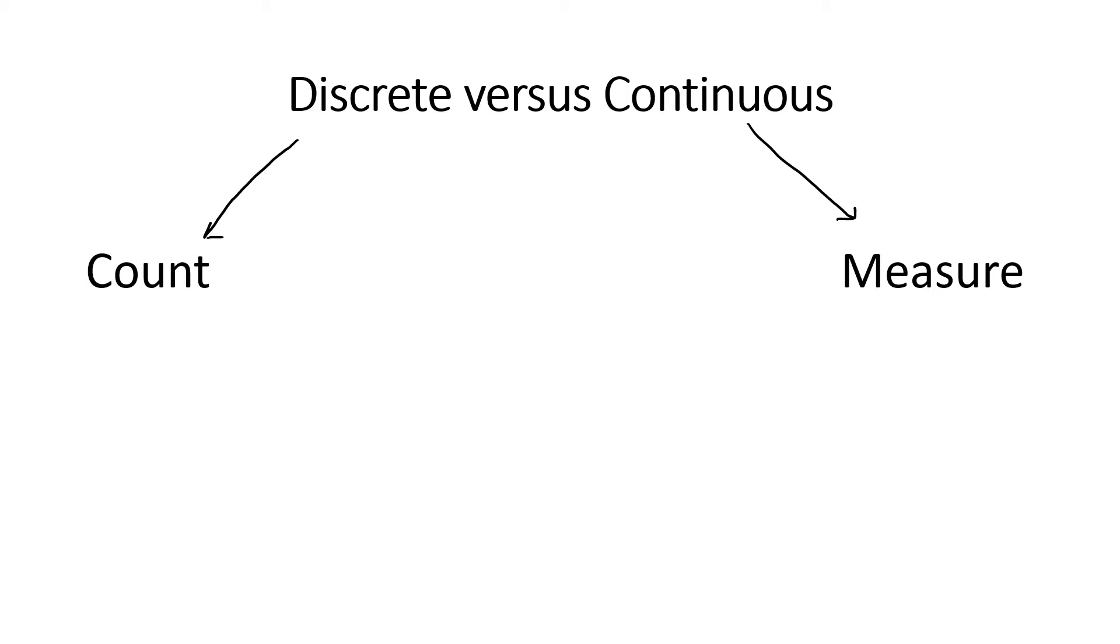Let's try a few examples. First, the number of classes that you're taking this semester. The number of classes you're taking this semester is going to be some sort of whole number. One class, two classes, etc. This is discrete.